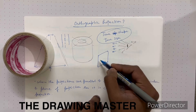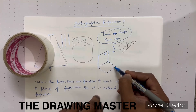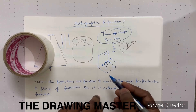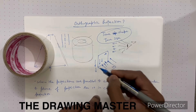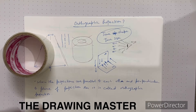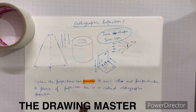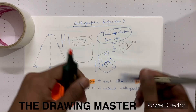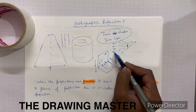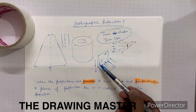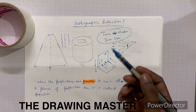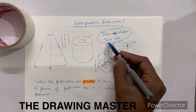Let's say this is the plane of projection VP, and this is HP. When the projections are parallel to each other and perpendicular to the plane of projection, it is called orthographic projection. So the objective of orthographic projection is to get the true shape and true size of the object.